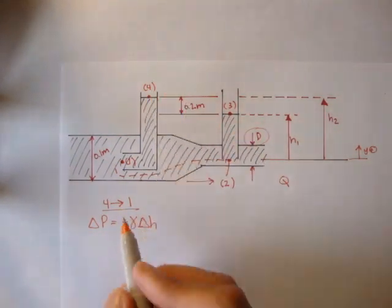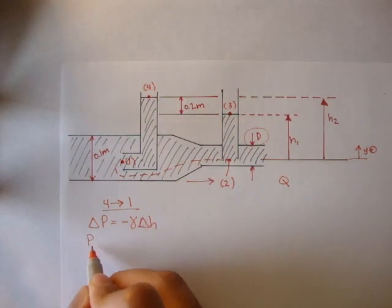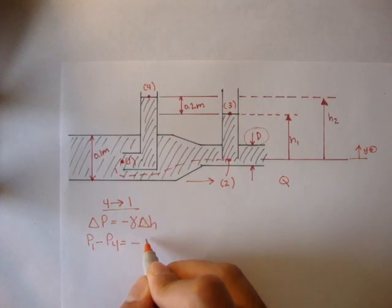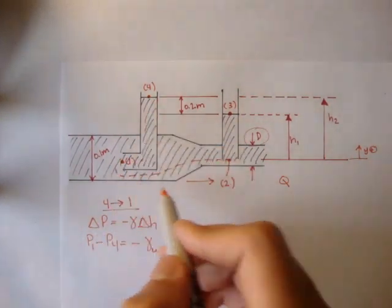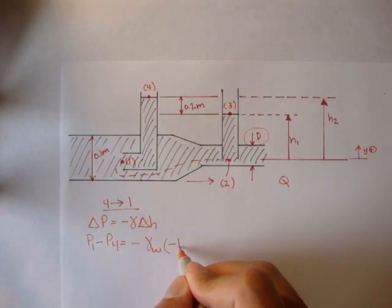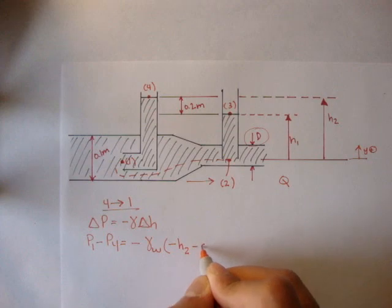And we can say the final minus the initial. So if we start at four, we can say pressure one minus pressure four is equal to negative gamma of water, because all of this is water, times negative h2 minus zero.